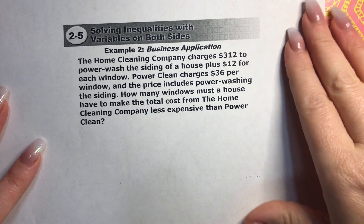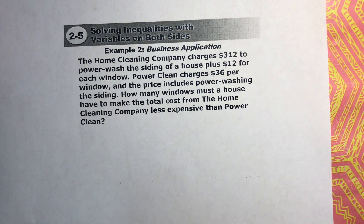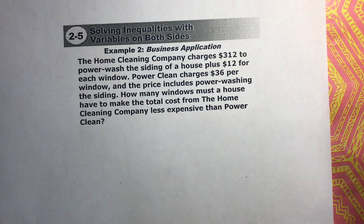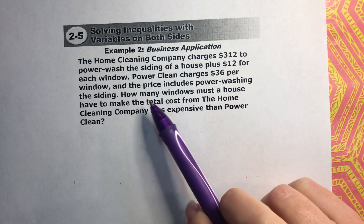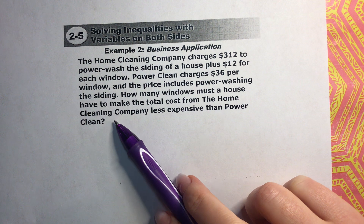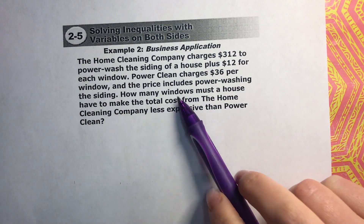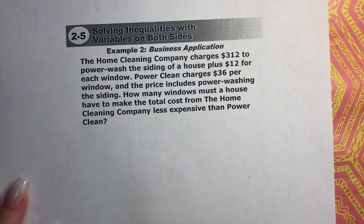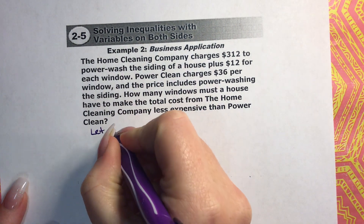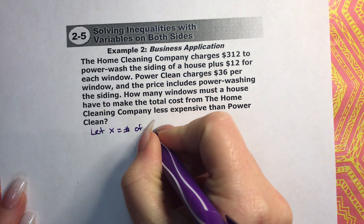We need to set up an inequality. Before we do that we need to define our variable. What is the thing that we don't know? It always says it in the question: how many windows must a house have to make the total cost? So it's how many windows. That means our variable is going to be the number of windows. Let X equal number of windows.